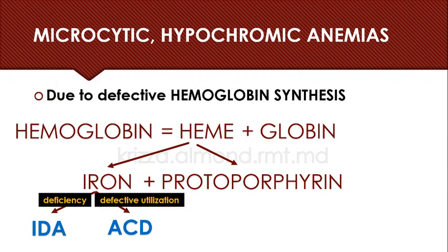If iron is okay but protoporphyrin is not — meaning if the problem is in the synthesis of protoporphyrin — then that will give rise to an anemia we call sideroblastic anemia.